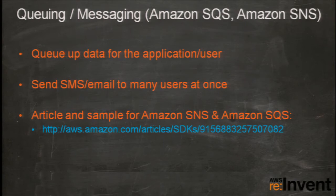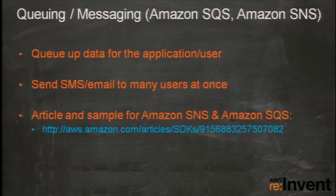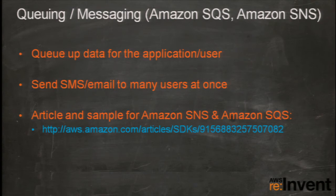Another sample we include is our message board sample, highlighting Amazon SQS (Simple Queue Service) and Amazon SNS (Simple Notification Service). This enables setting up queues where you can put messages, and for the notification service, you can subscribe people to receive notifications via text message or email. You can connect a queue to a topic — anyone subscribed to that topic receives those notifications. We have a sample and article that details the code for running it.